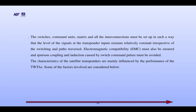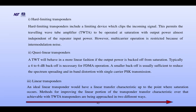The characteristics of satellite transponders are mainly influenced by the performance of the TWTs. Some of the factors involved are considered below. Hard limiting transponders include a limiting device which clips the incoming signal. This permits the travelling wave tube amplifier TWTA to be operated at saturation, with output power almost independent of the repeater input power. However, multi-carrier operation is restricted because of inter-modulation noise.